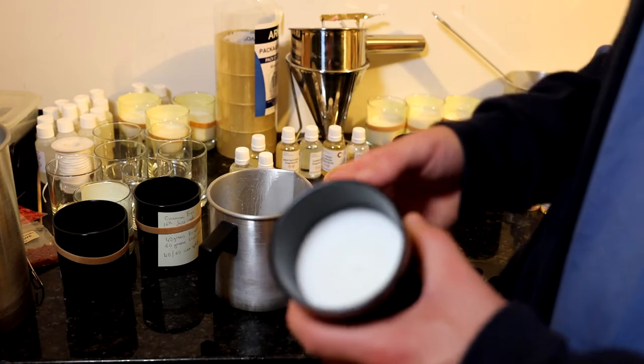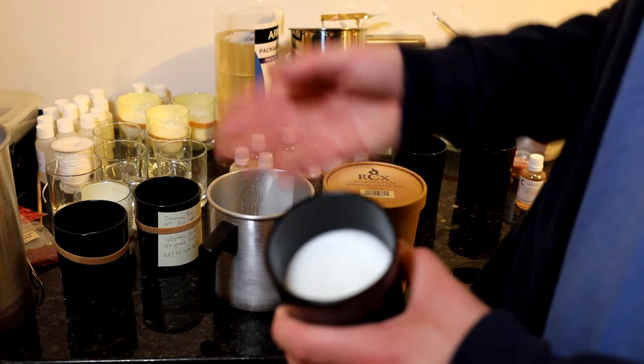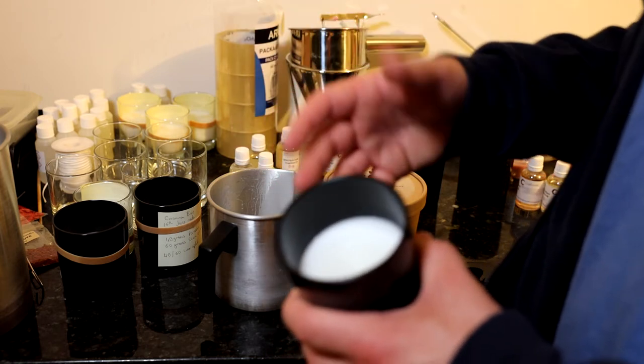Then I'm testing that wick. If that wick doesn't seem to be performing very well, then I blow out the candle, let it harden, pull the wick out, stick a different type of wick in, then test again.